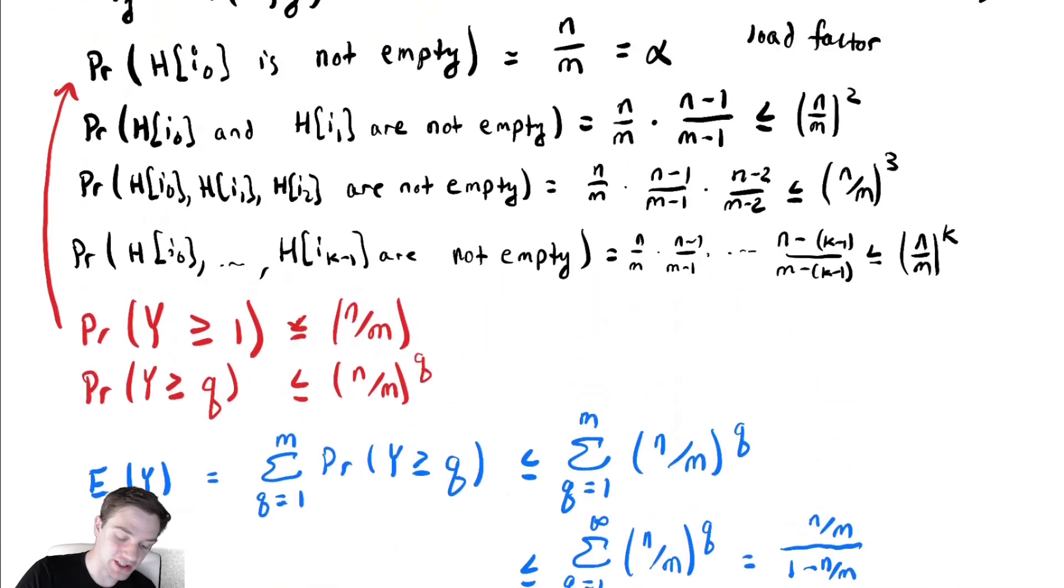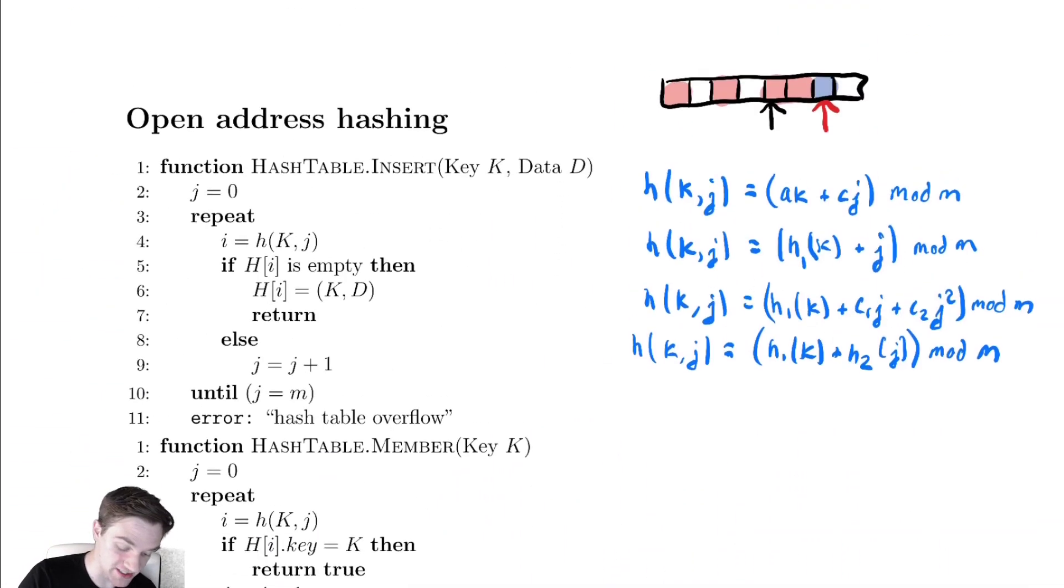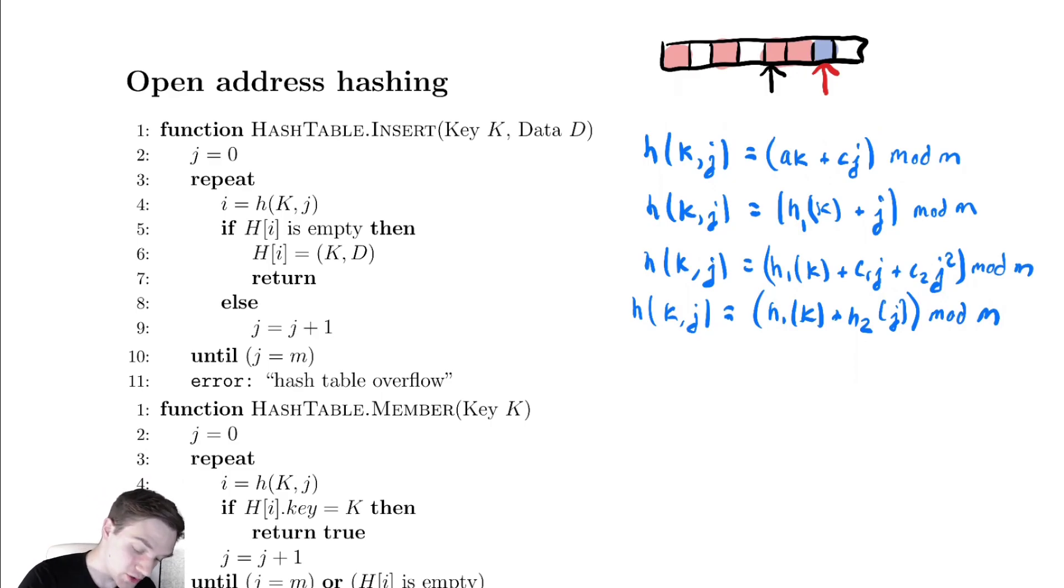Let's look at the code and analyze best and worst cases. For this first function, the best case is no collision at all, clearly Θ(1). Our expected case we just analyzed and under our assumption was Θ(1). The worst case is we search through everything in the hash table and it's completely full. Therefore, the worst case is Θ(n) or Θ(m) if talking about table size. In the worst case, those are identical.